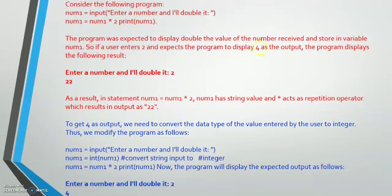But it will not display 4 — this is what type conversion means. When we give an instruction it has to be clear enough for the interpreter to understand: are we doing repetition, adding, or multiplying? num1 holds a string value, and the multiplication sign acts as a repetition operator, which results in the output as 22. The star sign acts as a repetition operator, so the value 2 is repeated twice, making it 22.